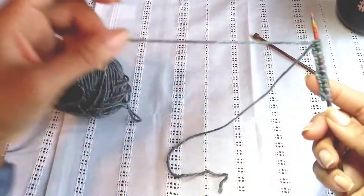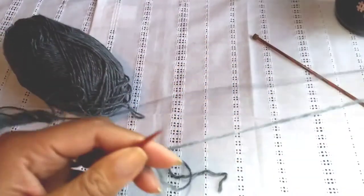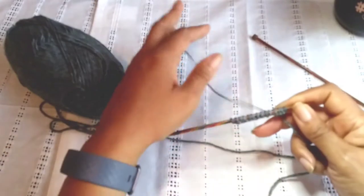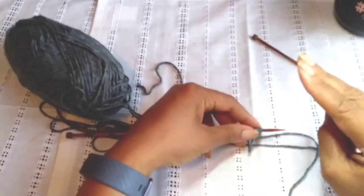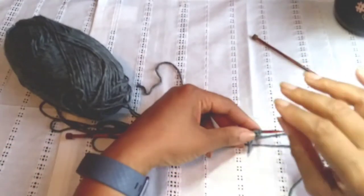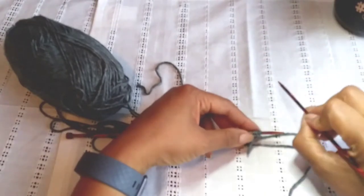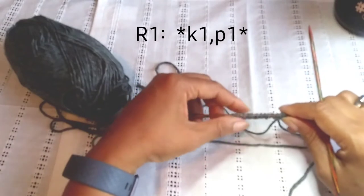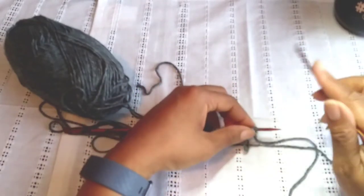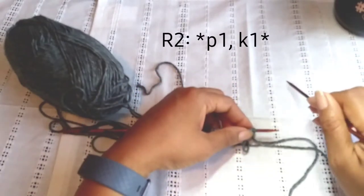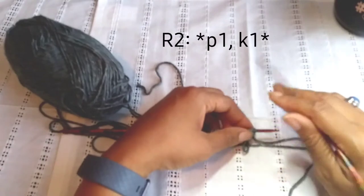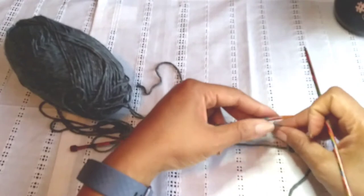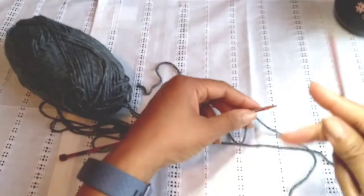Okay, 14 stitches. So we're going to begin. The seed stitch has two rows. The first row is going to be knit one, purl one, knit one, purl one to the end of the row. And row two is purl one, knit one, purl one, knit one to the end of the row, that same sequence. So let's do the first two rows so you can see how it's done.